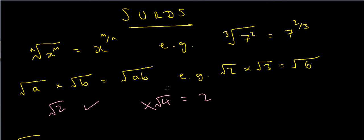There are some general rules you should be aware of. The first rule says that the nth root of x to the m is equal to x to the m over n. So for instance, the cube root of 7 squared is 7 to the 2 over 3. The second rule, perhaps the most important, says that the square root of a times the square root of b equals the square root of ab. If the radicals are the same — both square roots or both cube roots — you can collect them under the same radical.